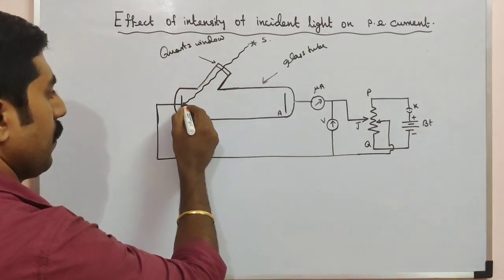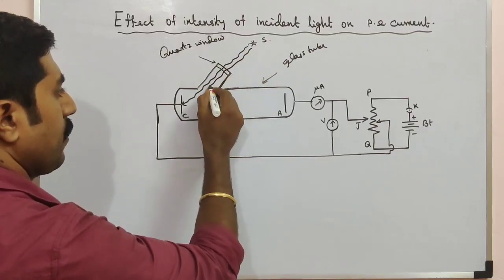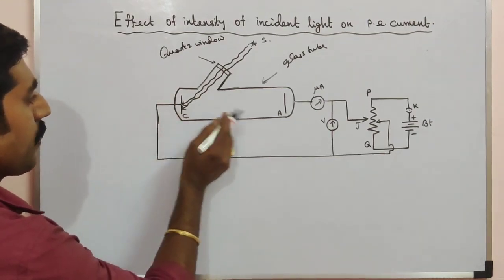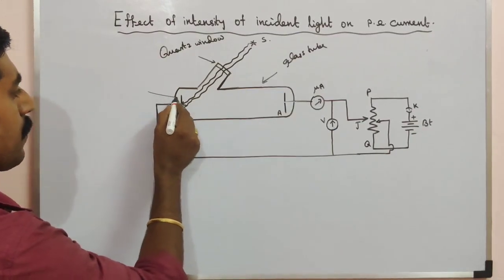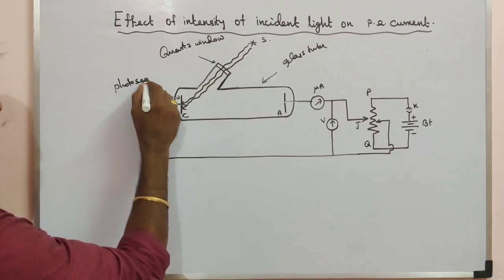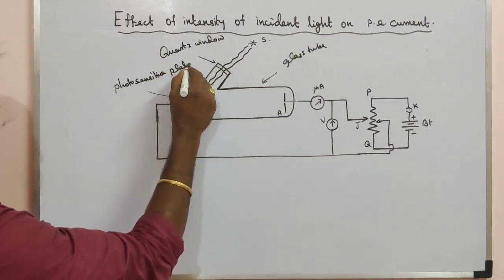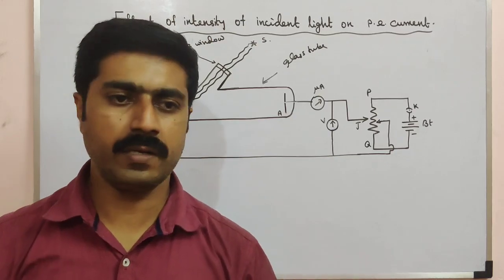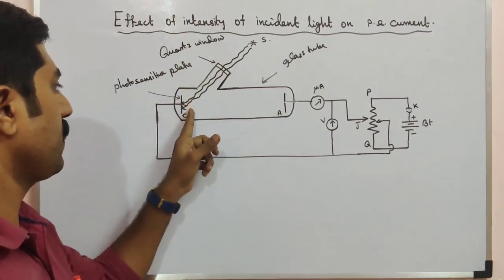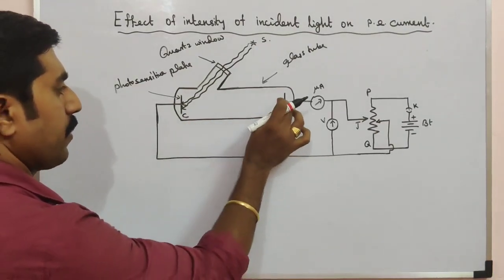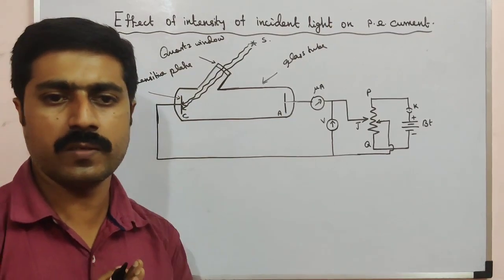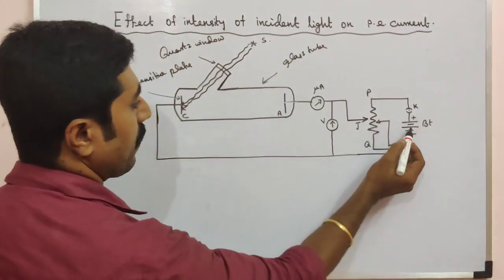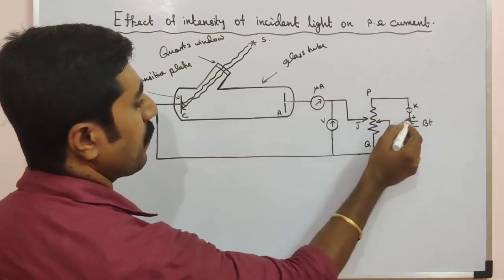So this is the UV ray, or otherwise this is visible light. Here two metal plates are there — these are photosensitive plates. One plate is C (cathode) and another one is A (anode). Both are the same material — zinc. C is connected with the negative terminal and the anode is connected to the positive terminal of the battery.